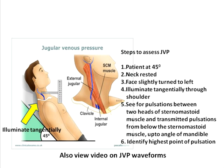Illuminate and look for the pulsation — this is the principle in cardiovascular medicine. Pulsations are seen with a tangential illumination as shown in the diagram. Once you have appropriately positioned the patient with the head slightly turned to the left and illuminated tangentially, look for the pulsation between the two heads of the sternomastoid in the triangle as described in the anatomy video.